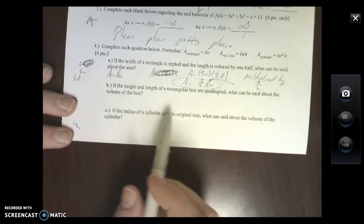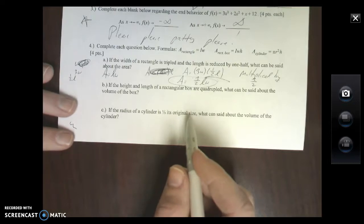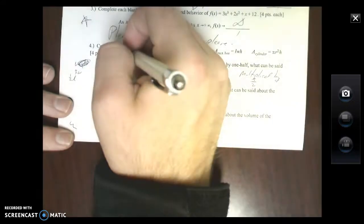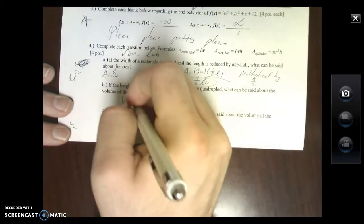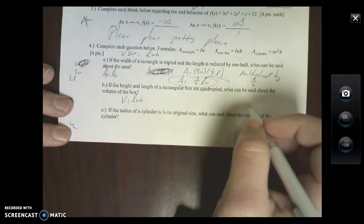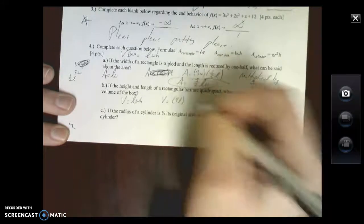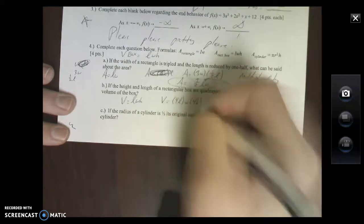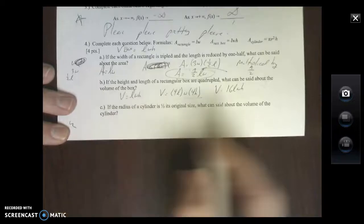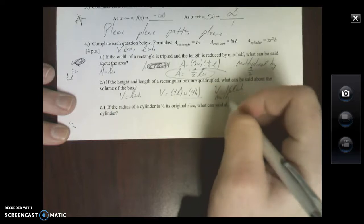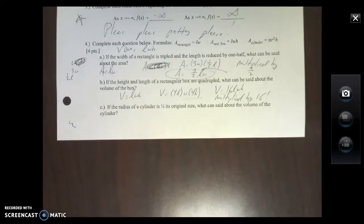Same idea for the second one: if the height and length of a rectangular box are quadrupled, what can be said about the volume of the box? Well, volume of a box is length times width times height. This is your normal one. It says if the height and length are quadrupled, so my length is quadrupled - that means times 4, so 4L. Width stays the same. And my height is quadrupled - it's 4H. Let's clean this up. What's 4 times 4? 16LWH. So here's my original, here's my new one. The only thing that changed is it was multiplied by 16.